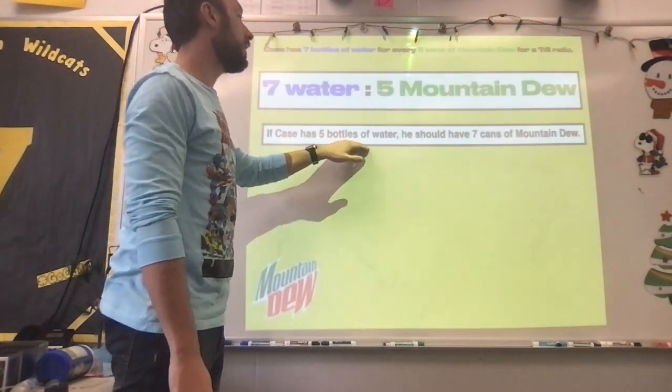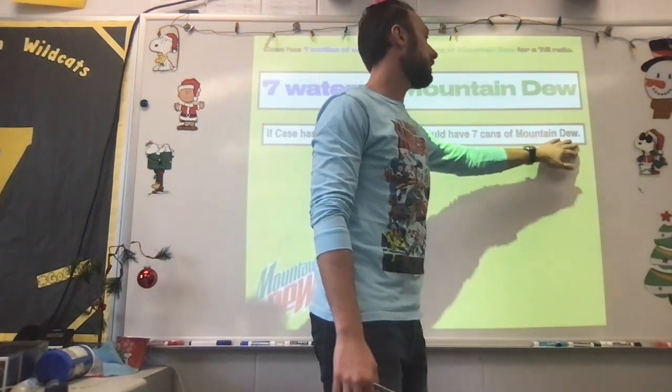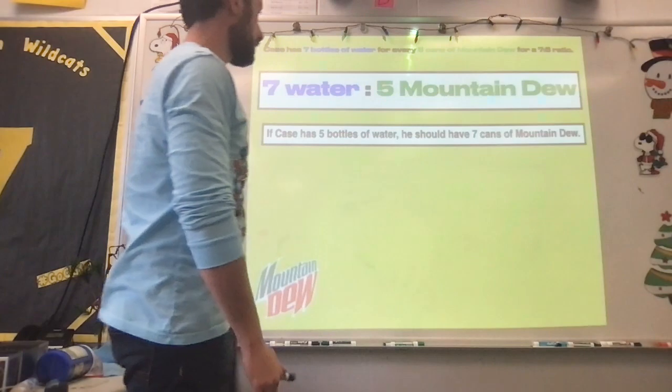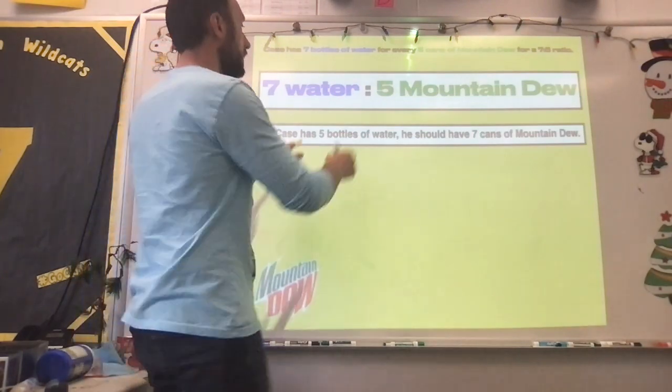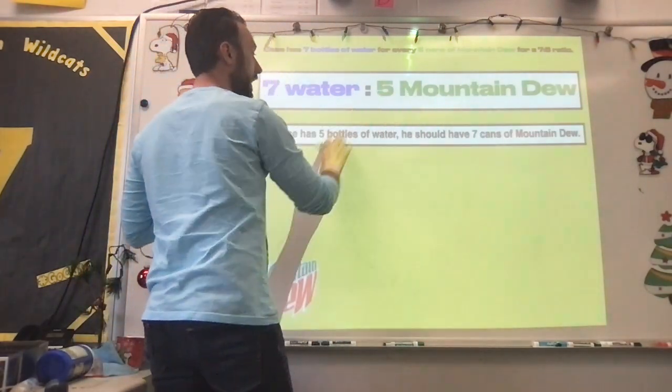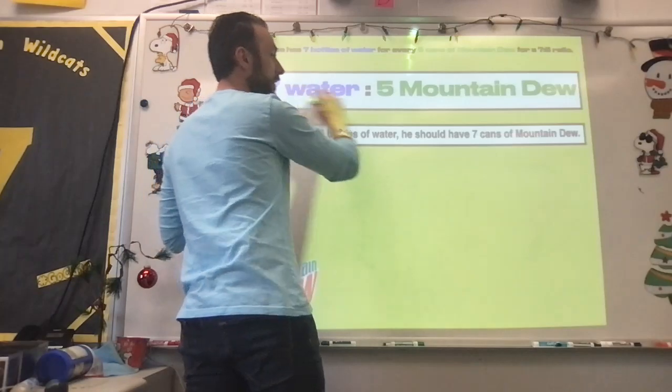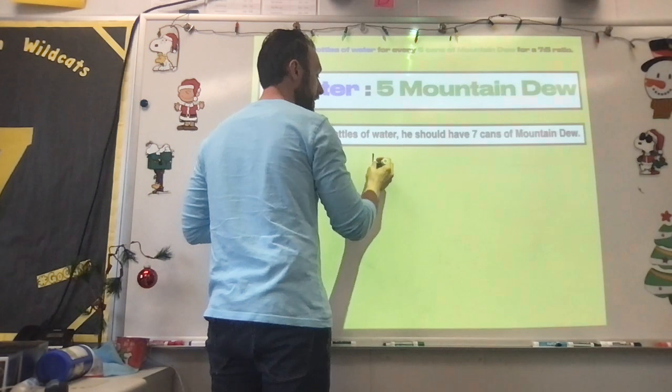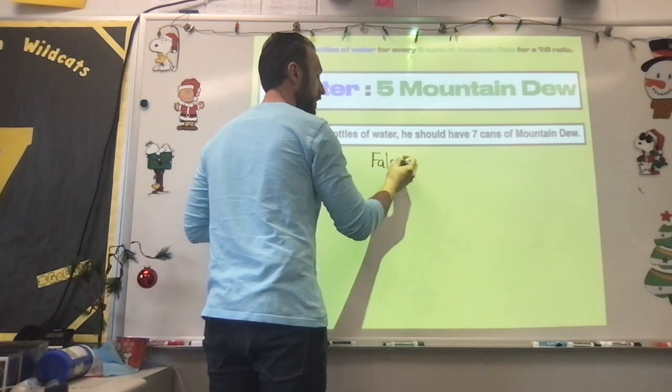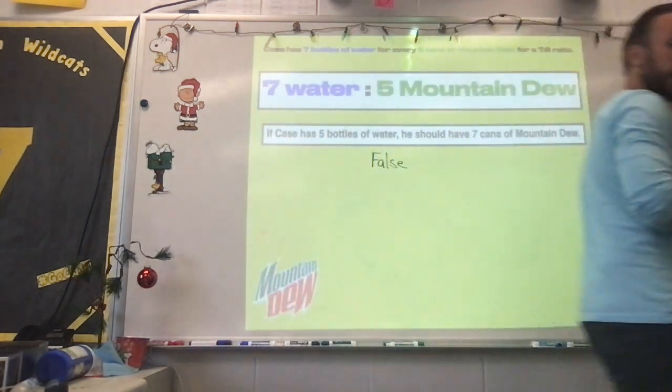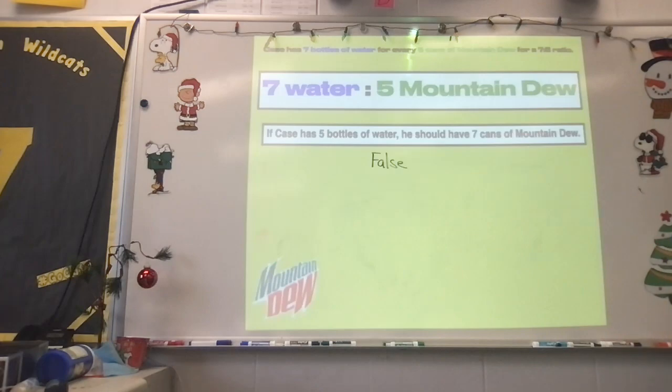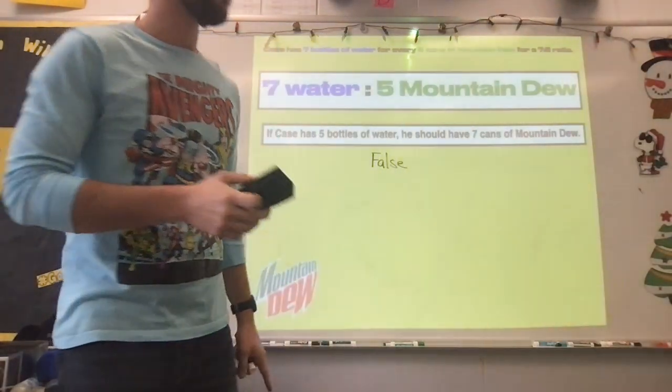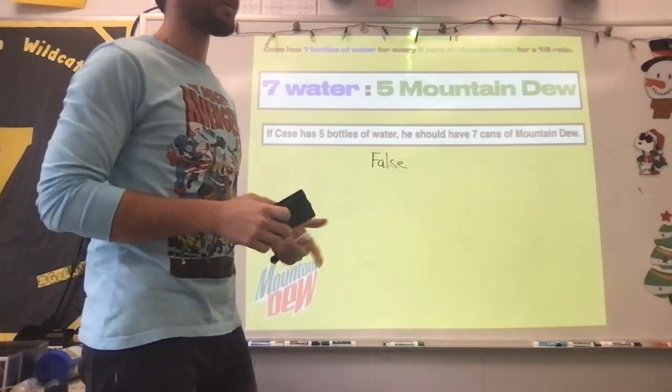And my first statement says, if Case has five bottles of water, he should have seven cans of Mountain Dew. Is this a true statement regarding what the ratio was at the top? No, it's not, because you notice the numbers are flip-flopped. Mountain Dew is five, water is five, water is seven, cans are seven. It's different, so it's not correct. This would be a false statement.